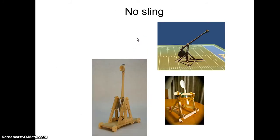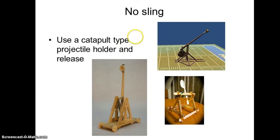These are examples of trebuchets that don't have a sling. You can use a catapult-type projectile holder, sort of like a cup, and then I think the release is going to be much simpler.